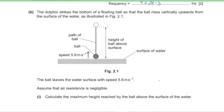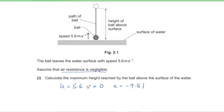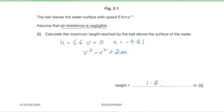Part B: the dolphin strikes the bottom of a floating ball so the ball rises vertically upwards from the water surface with speed 5.6 m/s. Air resistance is negligible. Part 1: calculate the maximum height reached above the water surface. Initial speed u = 5.6 m/s, final speed v = 0 at maximum height, and acceleration = −9.81 m/s². Using v² = u² + 2as, we get a maximum height of 1.6 meters.